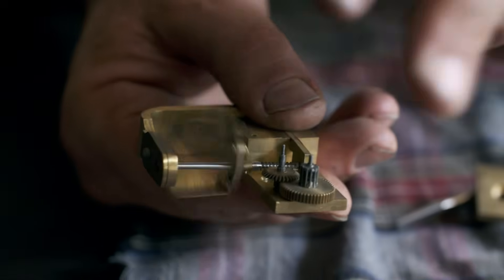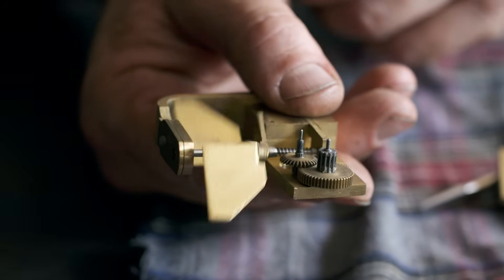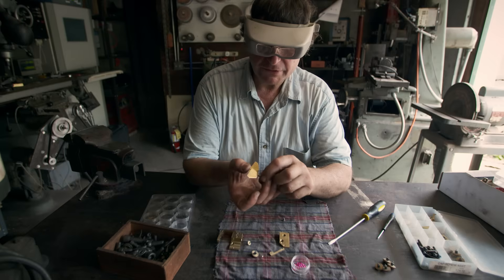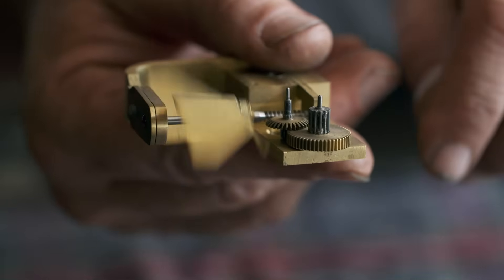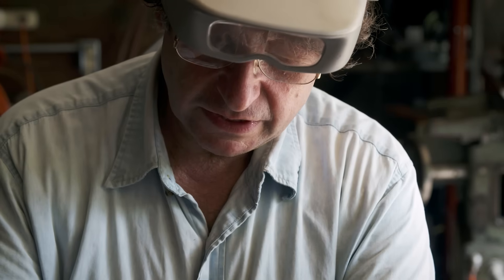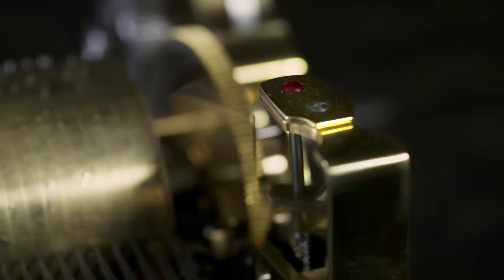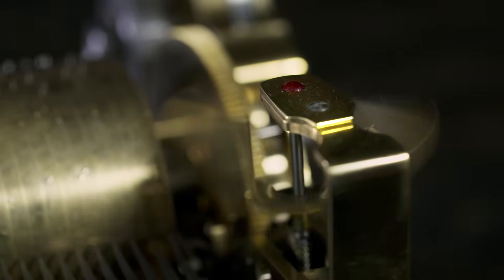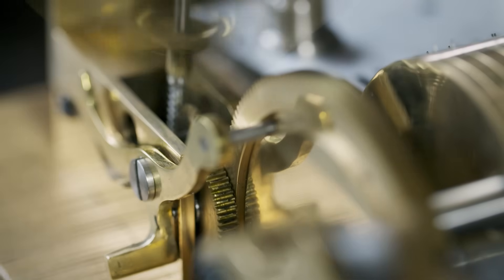The gears spin the governor a thousand times faster than the cylinder itself. That fast rotation makes big wings beat against the air. The faster it goes, the more wind resistance these fan blades generate. This acts as a brake on the fan blades to stop the cylinder from spinning out of control.